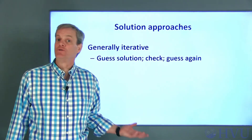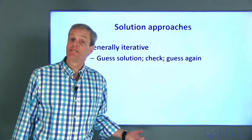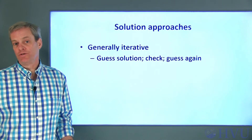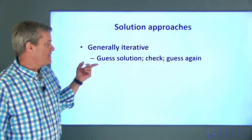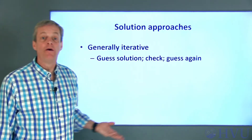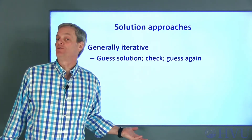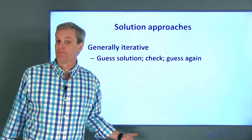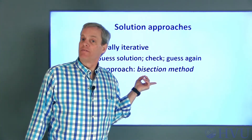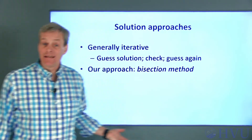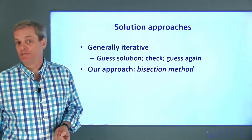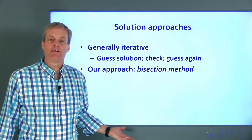As mentioned, solution approaches for nonlinear equations tend to be iterative, meaning it takes multiple steps to determine the solution. Typically, these steps consist of guessing a solution and then using the result of that guess to make another guess. The process repeats until the solution converges. Our solution approach will be the bisection method. It is guaranteed to find a solution, but convergence is relatively slow, so it may require a lot of computations.